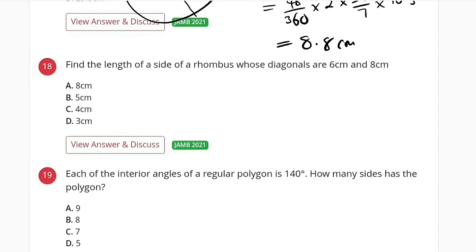Number 18. We are asked to find the length of a side of a rhombus whose diagonals are 6 and 8 respectively.